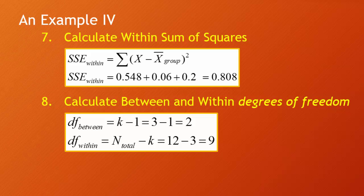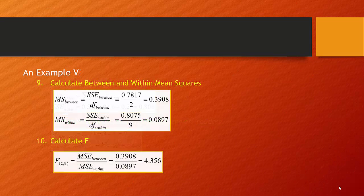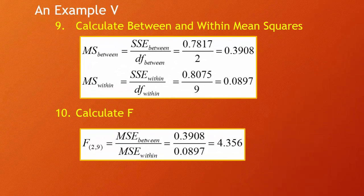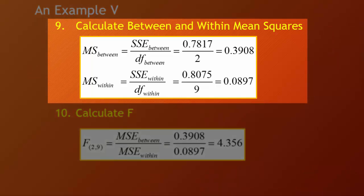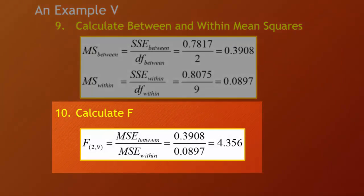Now we have both sum of squares — between (0.782) and within (0.808). We calculate degrees of freedom: between is k minus 1, so 3 minus 1 equals 2 degrees of freedom. Within is total sample size minus number of groups: 12 minus 3 equals 9 degrees of freedom. Mean square between is 0.782 ÷ 2 = 0.3908, and mean square within is 0.808 ÷ 9 = 0.0897. F(2,9) = 0.3908 ÷ 0.0897 = 4.356.